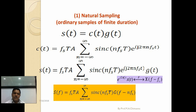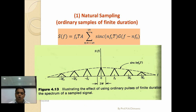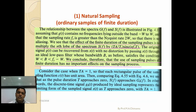In natural sampling, the ordinary samples of finite duration are given as s(t) = c(t)·g(t), where c(t) = f_s·T times the summation. This gives S(f) = f_s·T·A times the summation from n = minus infinity to plus infinity of sinc(n·f_s·τ) times G(f minus n·f_s). The figure illustrates the effect of using ordinary pulses of finite duration. The effect of finite duration sample pulses is multiplied by the nth lobe of the spectrum: S(f) times (τ/T_s) times sinc(n·f_s·τ).